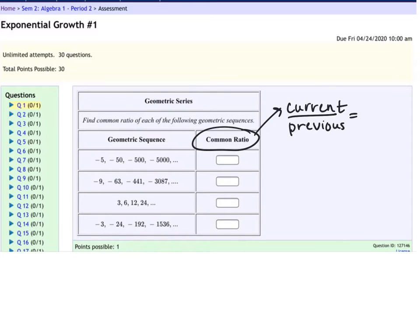So you need to remember that the common ratio is the current term divided by the previous term. So if I pick any term and divide it by the previous, I get the common ratio. So in this first line, negative 50 divided by negative 5 is positive 10. Negative 500 divided by negative 50 is positive 10. Negative 5,000 divided by negative 500 is also positive 10. It's what you multiply by to get the next number.